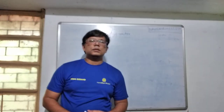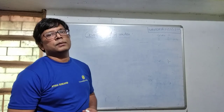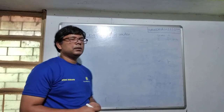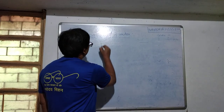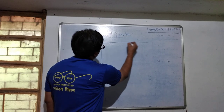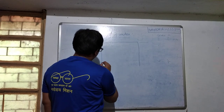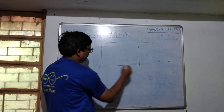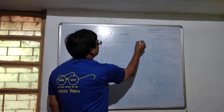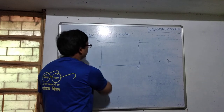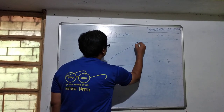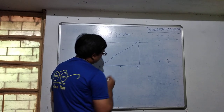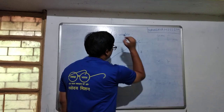Dear friends, we have just completed our theory on vector mathematics. Let us do some problems. Let us take a simple problem. There is a parallelogram — or say this is a rectangle — named ABCG. The length of AB is 4 and the length of BC is 3.